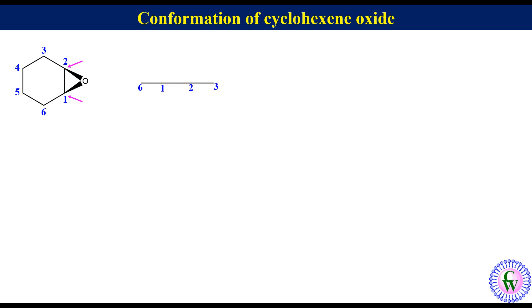With the remaining two carbon atoms placed one above and one below that plane. This conformation is called the half-chair conformation.